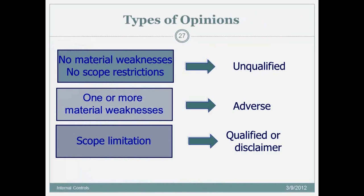Regarding Section 404 reporting and types of opinions: you can issue an unqualified opinion on internal controls meaning no material weaknesses, an adverse opinion meaning one or more material weaknesses, or a qualification or disclaimer opinion — issued when there's a scope limitation and you were unable to audit a particular area's system of internal control. We'll talk more about these when we discuss audit reports.